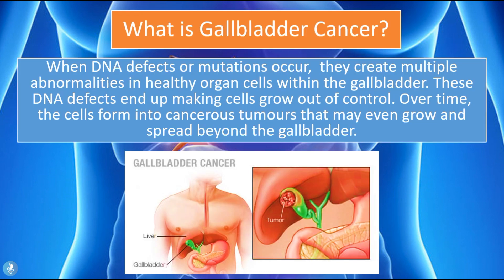So what is gallbladder cancer? When DNA defects or mutations occur, they can create multiple abnormalities in healthy organ cells within the gallbladder. These DNA defects end up making cells grow out of control, and over time these cells can form into cancerous tumors that may even grow and spread beyond the gallbladder.